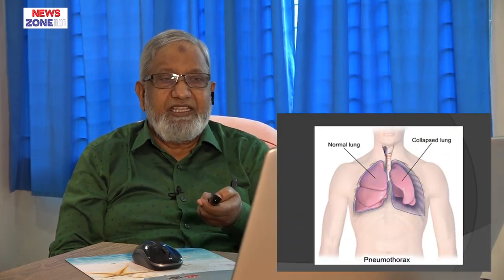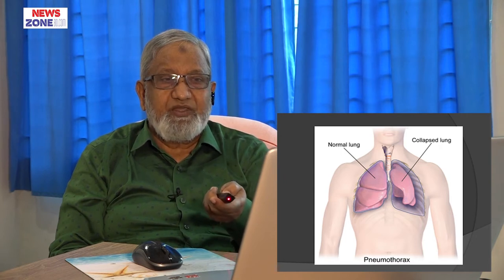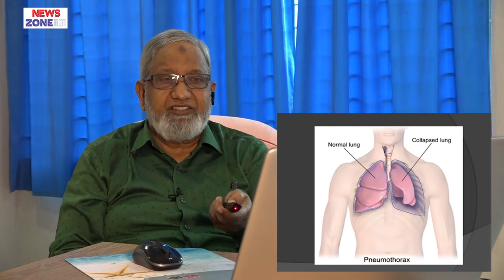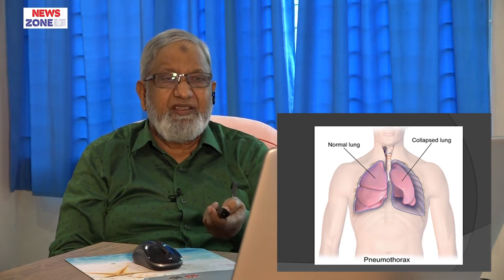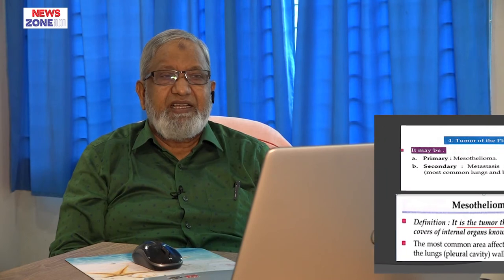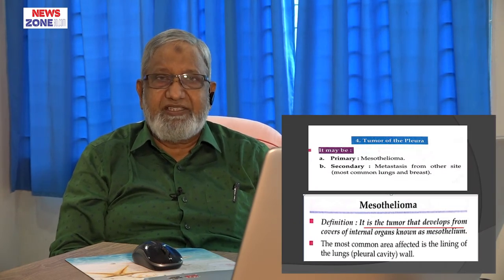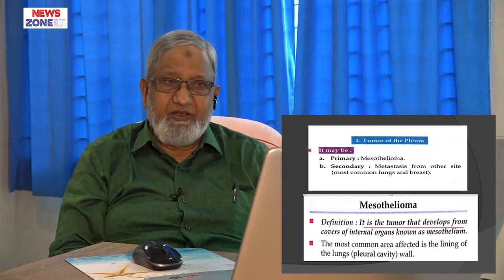If there is pneumothorax, then there is collapse of the lungs. The total lung capacity will be decreased, so there is dyspnea. One common question may ask about the tumours of pleura.